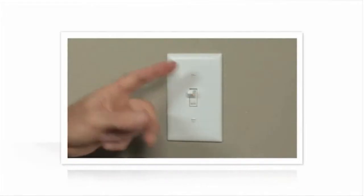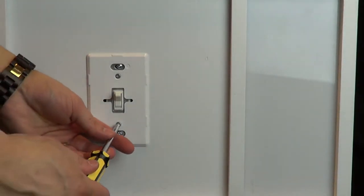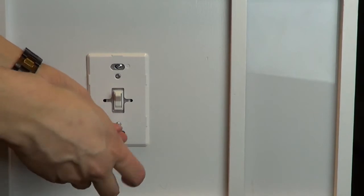Before you begin, you'll need to turn your power off at the circuit breaker. Confirm the power is off by flipping the switch you're going to replace on and off. Typically, you'll need a Phillips head screwdriver, a pair of pliers, and a piece of electrical tape to do the job.